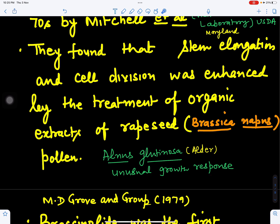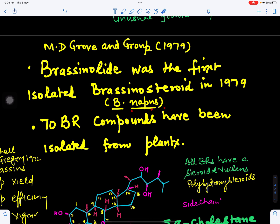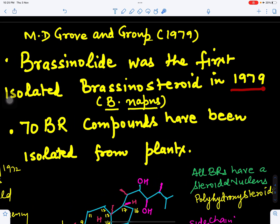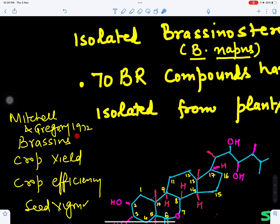This was studied by MD Grove and group in 1979. They took these pollen grains, extracted them, and that extract contained a certain substance which was named brassinolide. Brassinolide was the first brassinosteroid isolated from Brassica napus pollens. It was named brassinosteroid in 1979 because it is from the Brassica species and is steroidal in nature. Till now, 70 brassinosteroids have been discovered from plants.